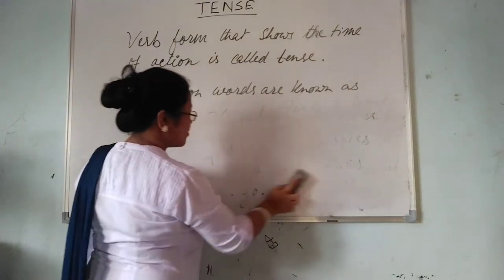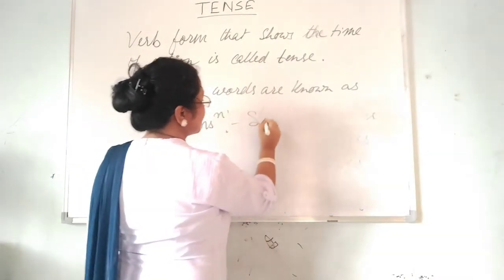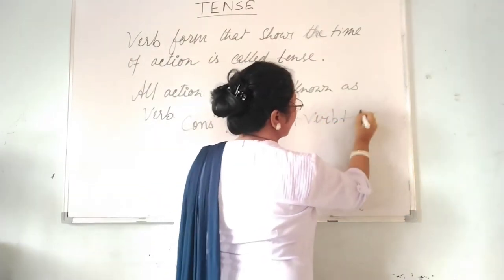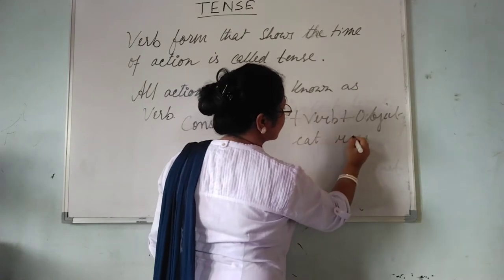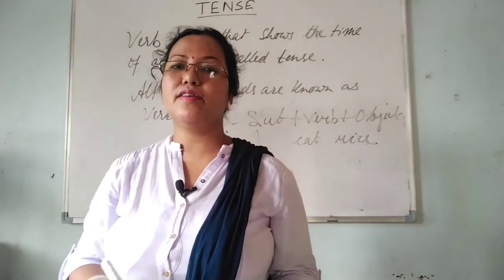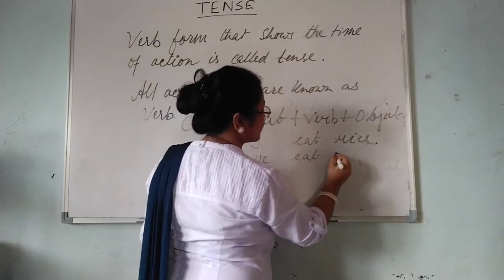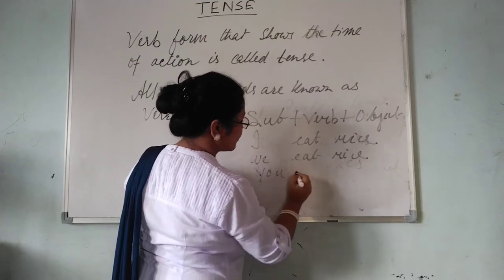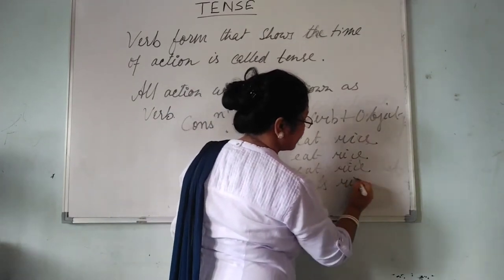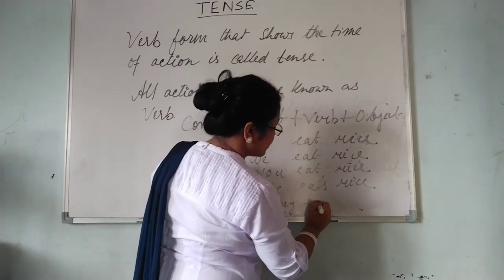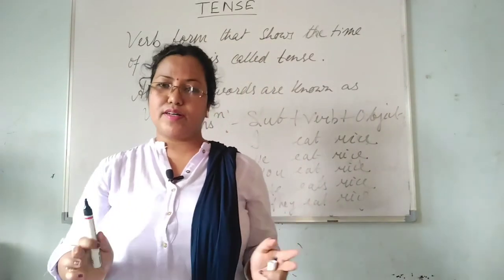Now let's know about the construction of present indefinite tense. The construction is: Subject + Verb + Object. For example, subject is 'I', verb is 'eat', object is 'rice'. Only in case of third person singular number, you have to add S to the verb. Like: I eat rice, we eat rice, you eat rice. In case of 'he', you write 'he eats rice'. They eat rice. Everybody eats rice. Very simple to remember.